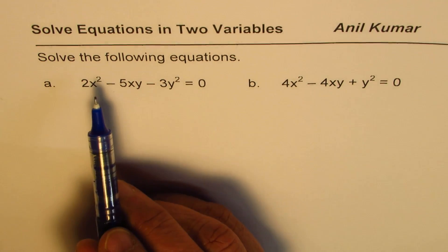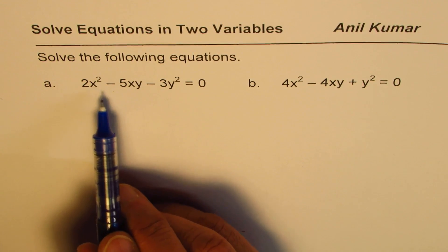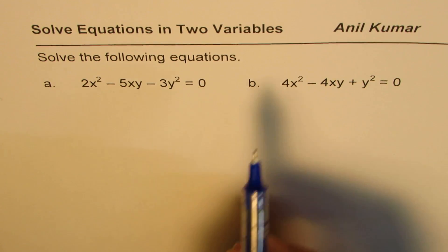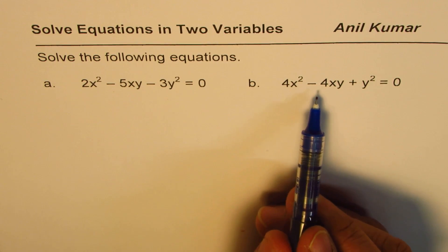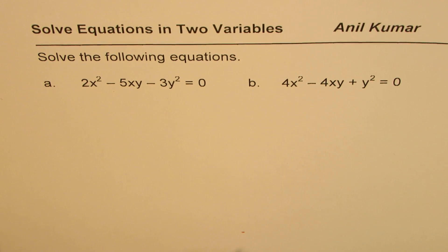So here we have two examples. The first one is 2x squared minus 5xy minus 3y squared equals to 0. The other one is 4x squared minus 4xy plus y squared equals to 0. Let us adopt the factoring techniques to solve them.